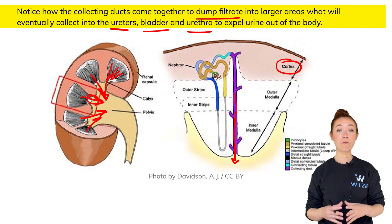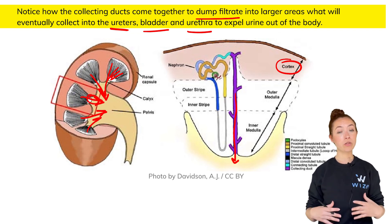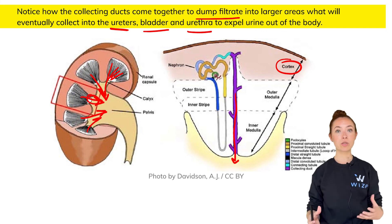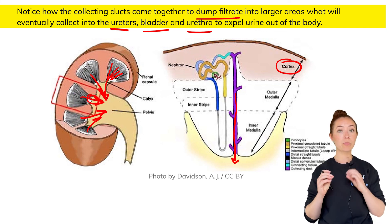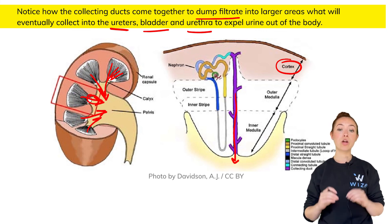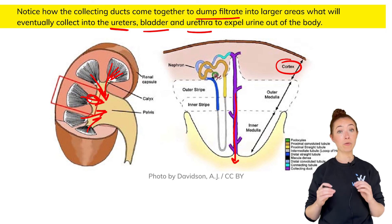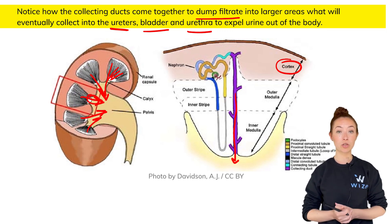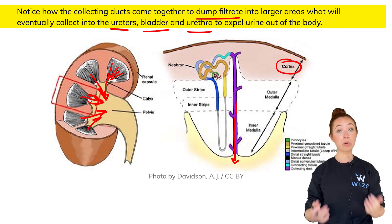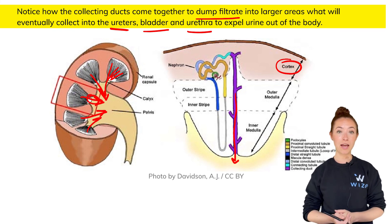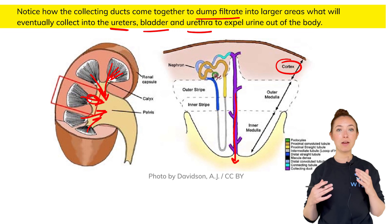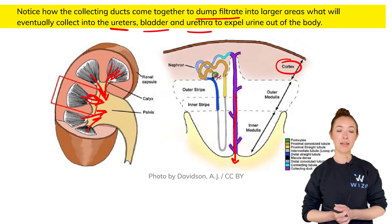That's it for all the parts of the nephron. The collecting ducts are extra special because they're able to fine-tune absorption of water — make sure to remember that for the MCAT, because the kidneys are a very popular topic for that exam. Review all of these again to ensure that you have them down. And that's it for this lesson.